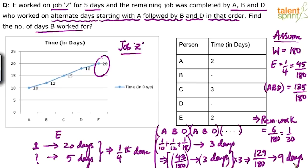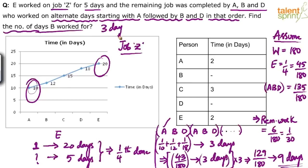After those 9 days, on the 10th day of the A-B-D cycle, A would come again. A's capacity is 1/10. To finish 1/30 of the work, A will take 1/3 of a day — he will not need a full day. The question asks for the number of days B worked. In the 9-day set, A worked 3 days, B worked 3 days, and D worked 3 days. On the 10th day A comes and finishes the remaining work. So B worked for 3 days — that is the answer.